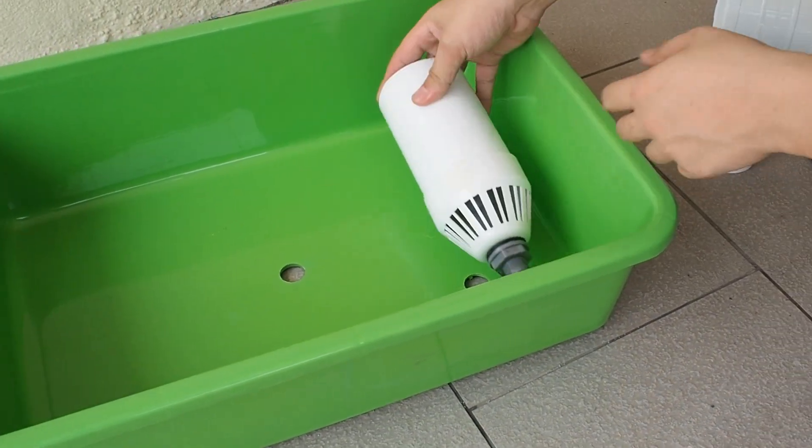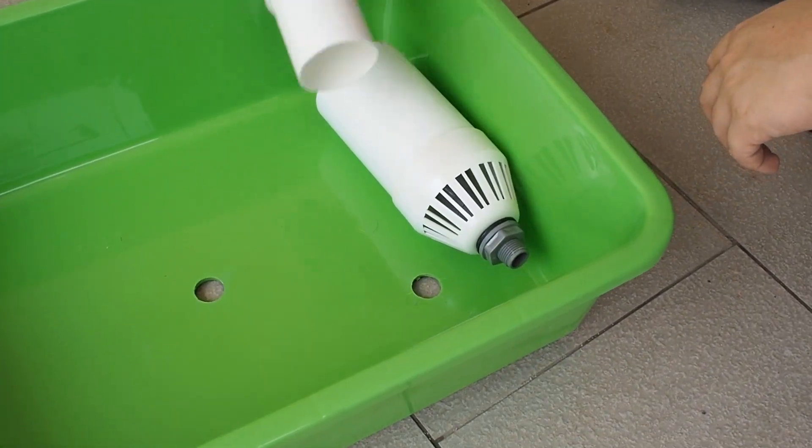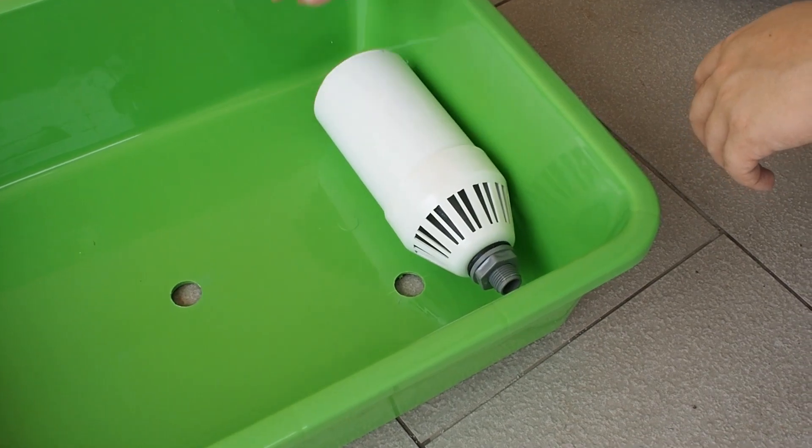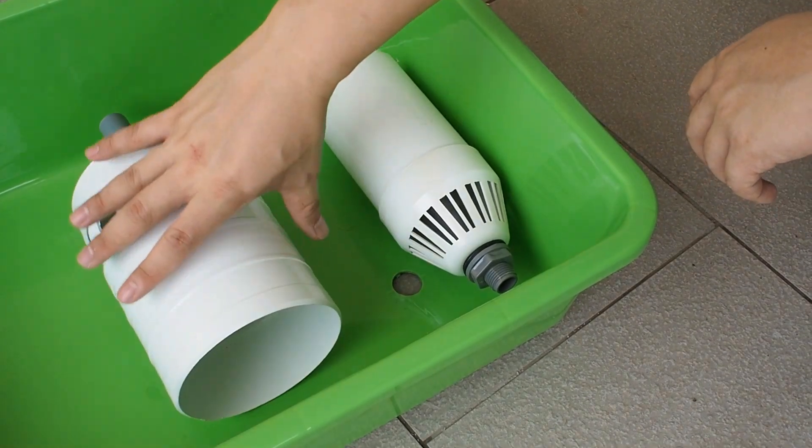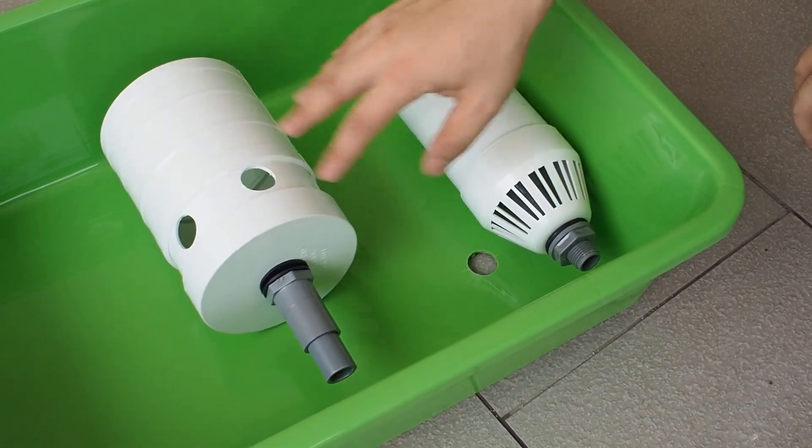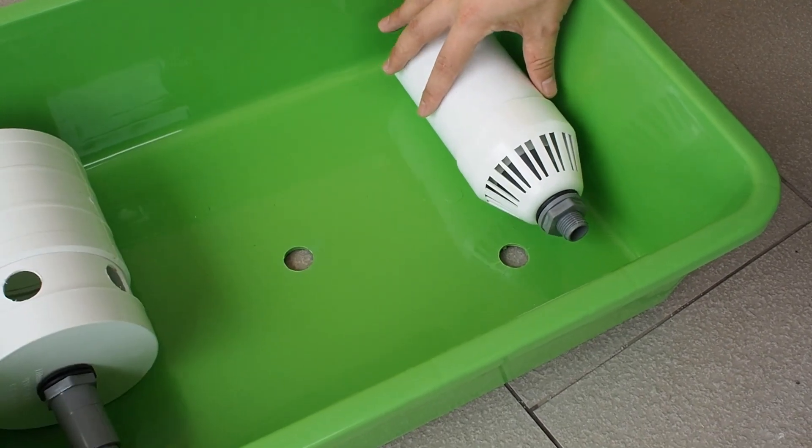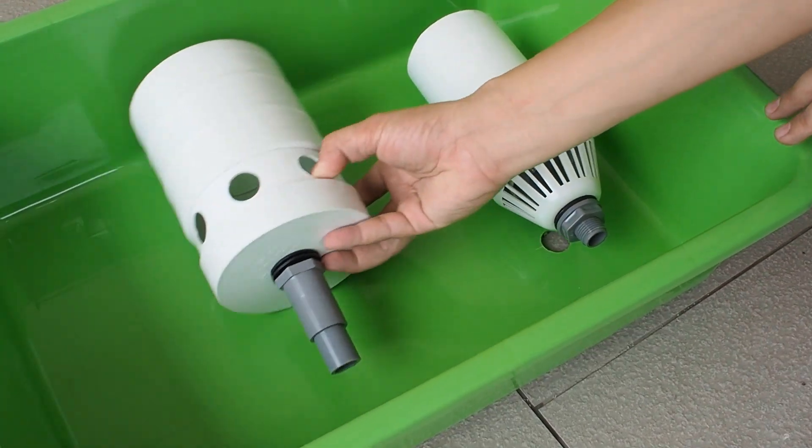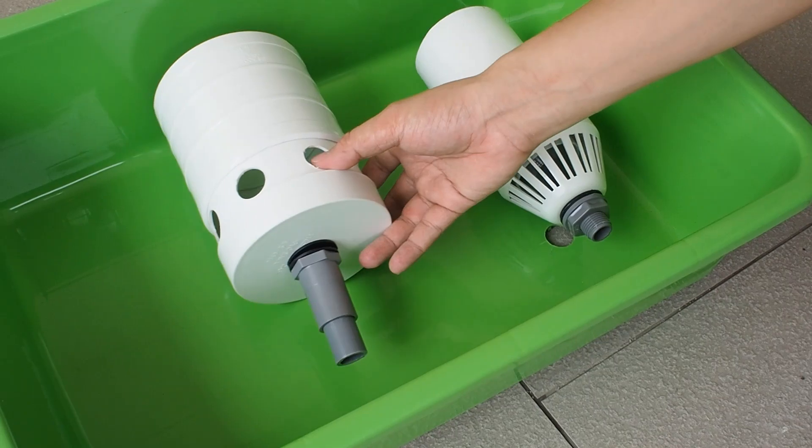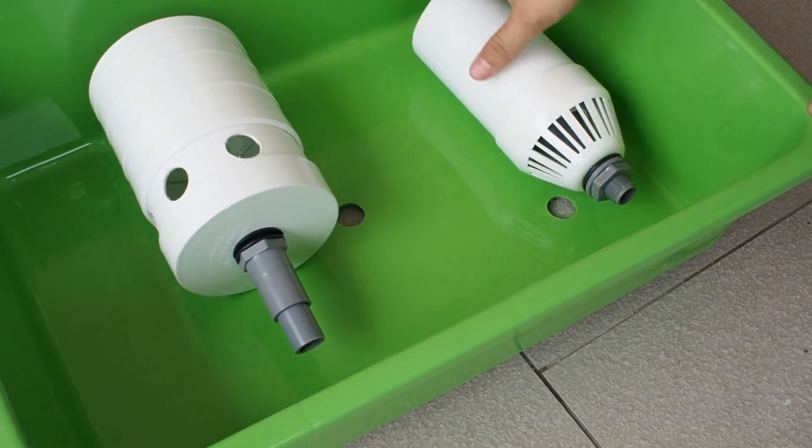This tray will have two parts: the bell siphon to control the water level and the tower base for you to secure the tower to the grow bed.